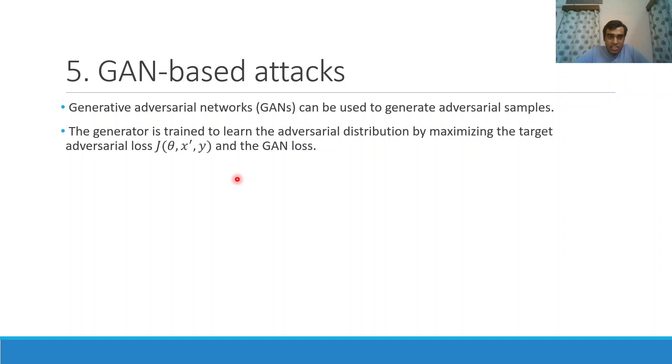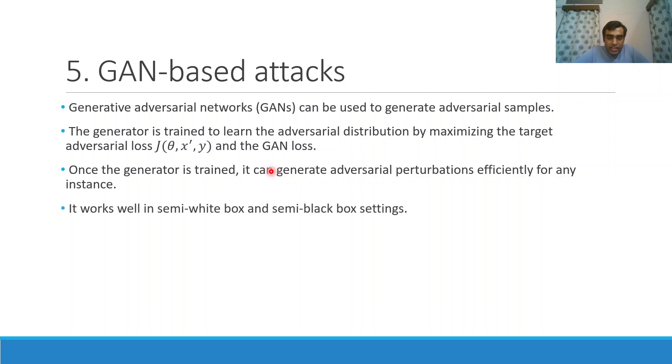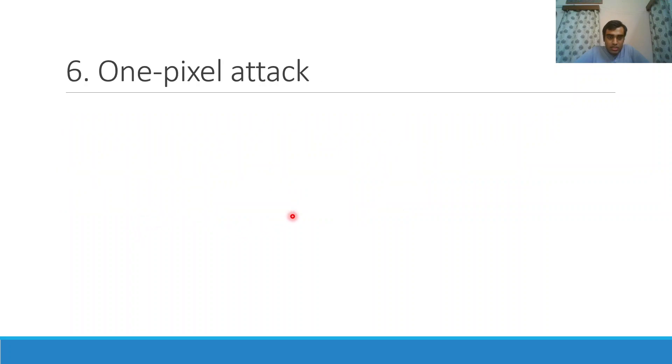For doing the attacks, the generator is trained to learn the adversarial distribution by maximizing the target adversarial loss j theta x dash y and the GAN loss. Once the generator is trained, it can generate adversarial perturbations efficiently for any instance. Earlier, the previous four methods we saw were taking an input image and then trying to find good perturbations or good noise to add to that. But here, once it learns the adversarial distribution, given any input image it can very efficiently find the corresponding good adversarial perturbations. To train this or learn the adversarial distribution, some information is needed and it works well in semi white box and semi black box settings.